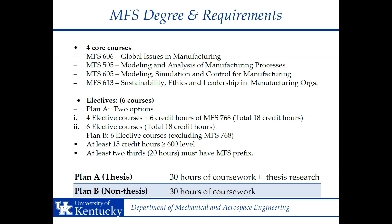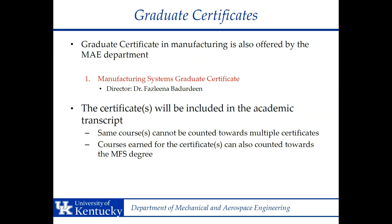With Plan B, you are able to complete six elective courses. Another option we have is our graduate certificate in manufacturing systems, offered through the Department of Mechanical and Aerospace Engineering, directed by Dr. Foslina Botterdeen. The certificate will be included in your academic transcript. A key perk is that courses earned for the graduate certificate can also be counted towards your manufacturing systems engineering master's degree.